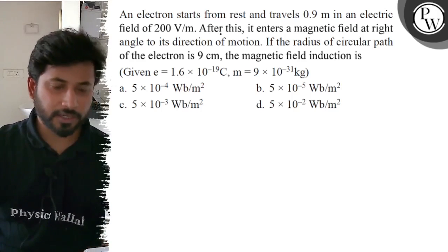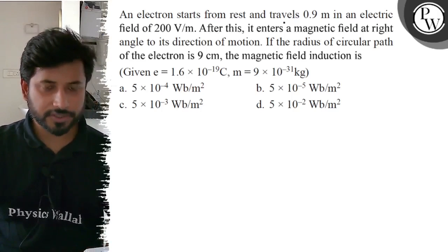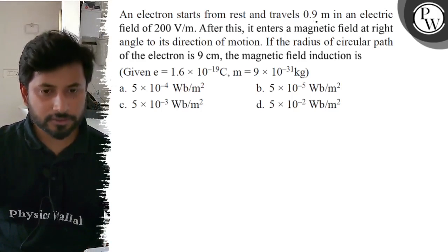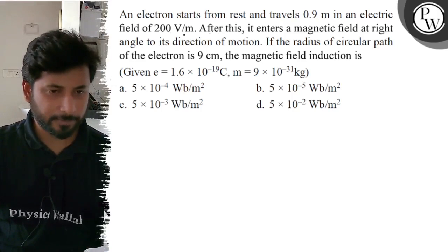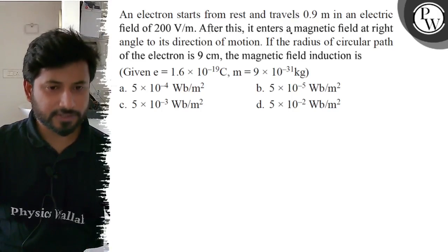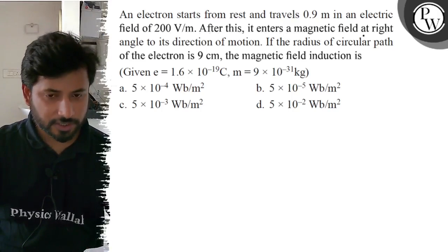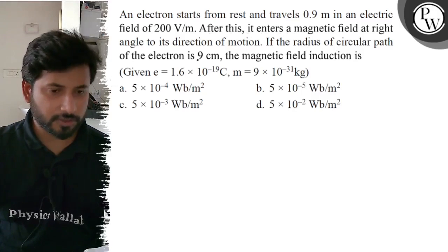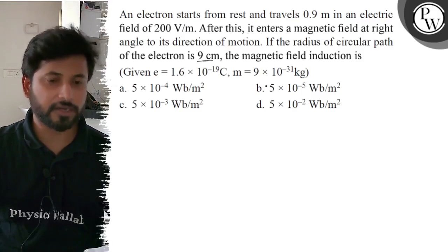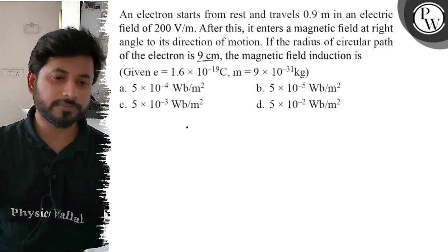Bachao, ek electron hai jo rest se start kiya hai, aur 0.9 meter chala hai kisi electric field mein. After this, it enters a magnetic field at right angle to its direction of motion. The radius of circular path diya hua hai 9 centimeter. The magnetic field poochh raha hai.